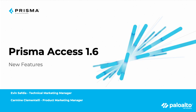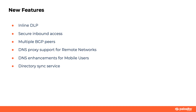Hello. In today's video we're going to talk about new features in Prisma Access version 1.6. My name is Evan Safdia, Technical Marketing Manager for Prisma Access here at Palo Alto Networks, and I'm joined by Carmen Clementelli, Product Marketing Manager for Prisma SaaS and Data Loss Prevention. The new features we'll be covering include inline data loss prevention, secure inbound access, multiple BGP peers, DNS proxy support for remote networks, DNS enhancements for mobile users, and the directory sync service.